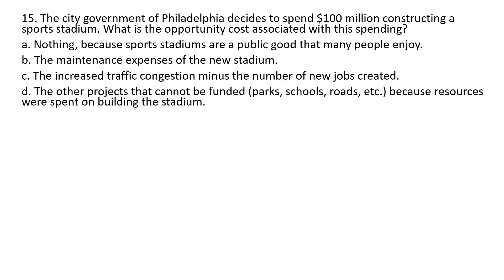Question 15. The city government of Philadelphia decides to spend $100 million constructing a sports stadium. What is the opportunity cost associated with this spending? The correct answer here is D: the other projects that cannot be funded because resources were spent on building the stadium. Answer D.